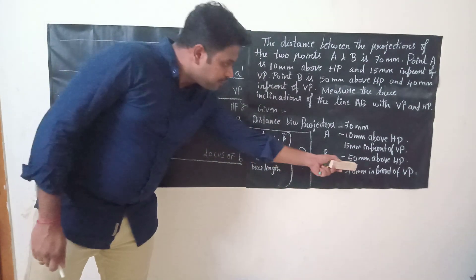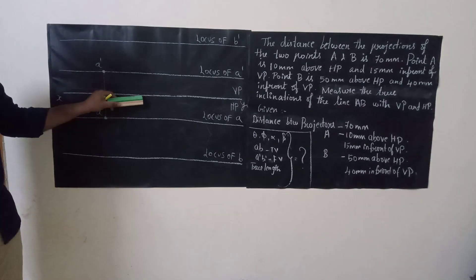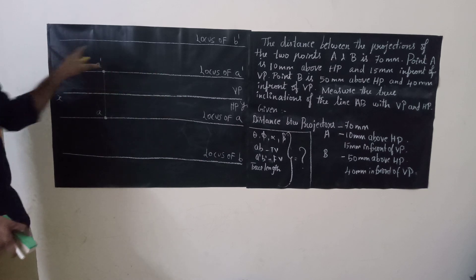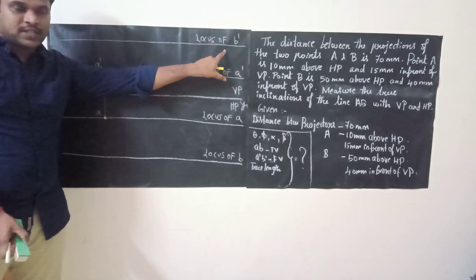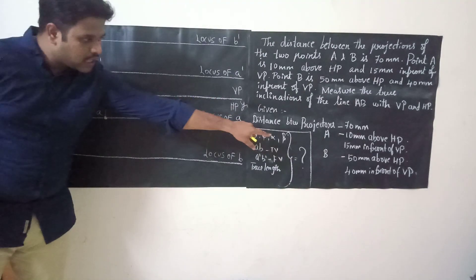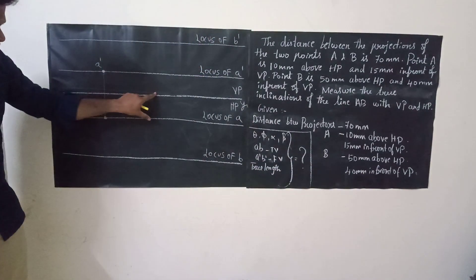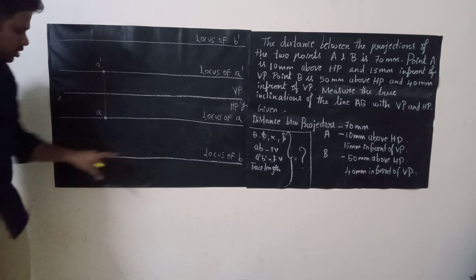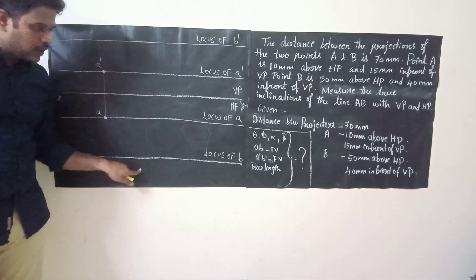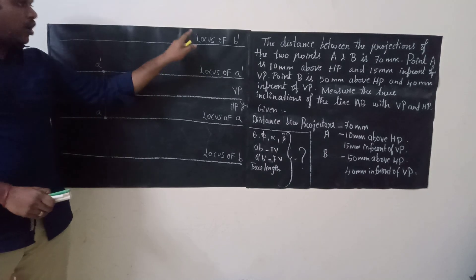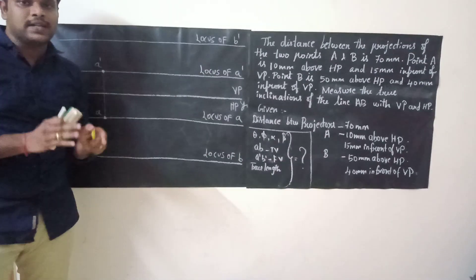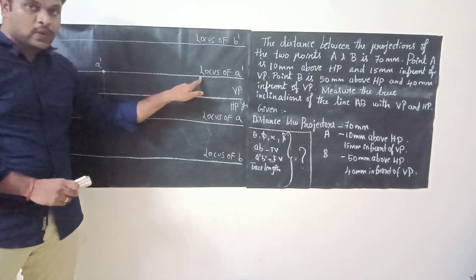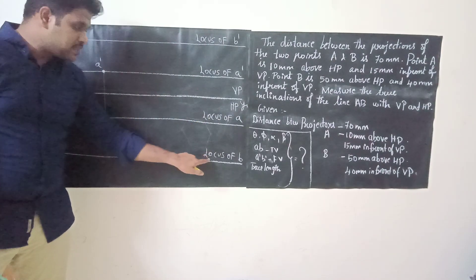The next point B is 50 mm above HP. From the reference line take 50 mm and draw a straight line — this is called the locus of B dash. And 40 mm in front of VP: from the reference line measure 40 mm and draw a straight line — this is the locus of B. Once we determine all 4 loci, 60% of the problem is done. Label the lines as locus of B dash, locus of A dash, locus of A, and locus of B.